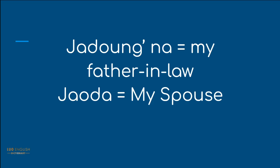Jaoda. Jaoda is acceptable for a spouse, whether it's female or male. You can say 'Ma Jaoda.' And 'Oda' means my house, so this is a person whom I stay with in my house — or that's a loose translation.